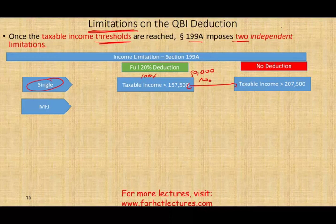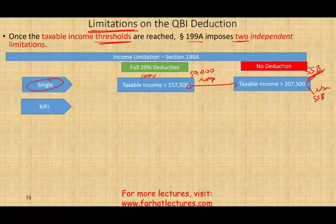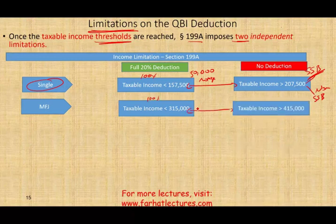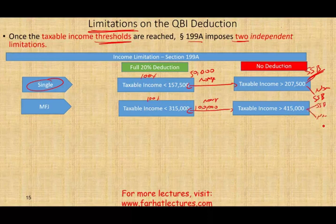Once your taxable income exceeds $207,500 and you're single, it's going to depend on whether you are an SSB — specified service business — or a non-SSB. If you are married filing jointly, the threshold is a bit higher. As long as your taxable income is below $315,000, you get 100% of the 20% deduction. Then there is a $100,000 range up to $415,000 where your deduction will be reduced. Once you exceed $415,000, we have to determine whether you are an SSB or a non-SSB.